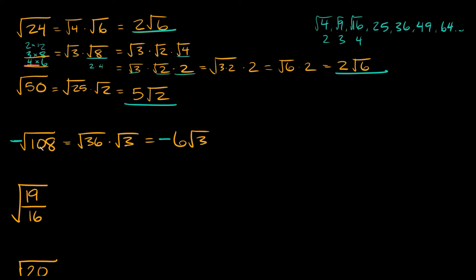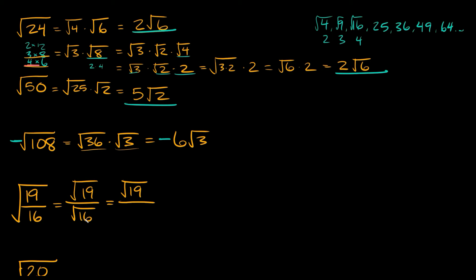Now here we have a fraction. Just like we can split square roots into multiple radicals, we can do the same with a fraction. The square root of 19 over 16 equals the square root of 19 over the square root of 16 — numerator and denominator each get their own radical. The square root of 19 stays as is since 19 is a prime number, but the square root of 16 is a perfect square equal to 4. So the final answer is the square root of 19 over 4.